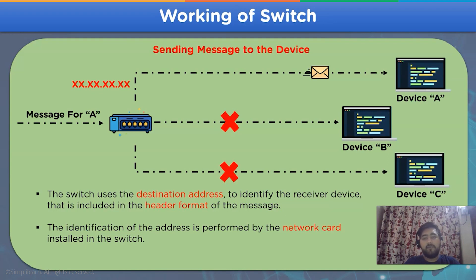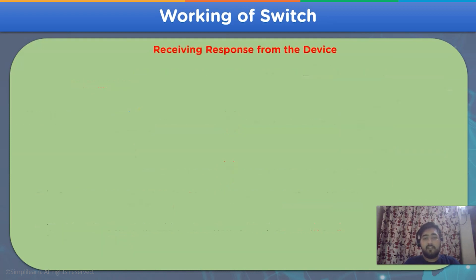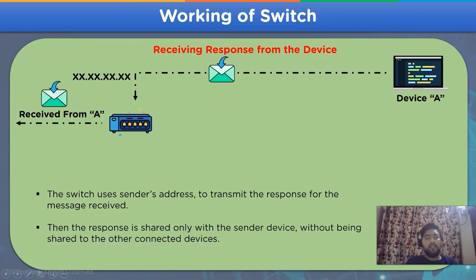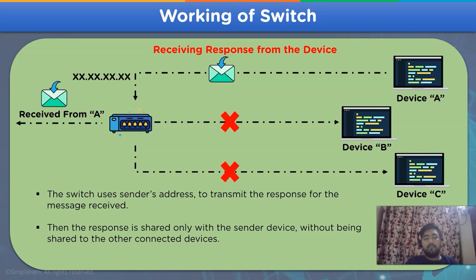This task of managing the address and sending the data to the designated device is handled using MAC address, which is used by the network card installed in the network device. In the second scenario — receiving a response from the device — the switch will receive a response from device A, which will be forwarded to the sender's address mentioned in the message. This prevents the response from being shared to device B and device C, due to the presence of a processing unit in the switch.